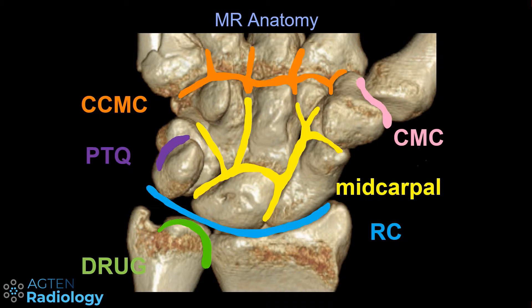You can have a variety of compartments in the wrist and they can or cannot communicate with each other, which is also depending on age. The first one is the distal radio-ulnar joint. Then we have the radiocarpal compartment, next is the midcarpal compartment, the pisotriquetral compartment, and then the common carpometacarpal compartment. As a separate compartment there is the first carpometacarpal compartment.